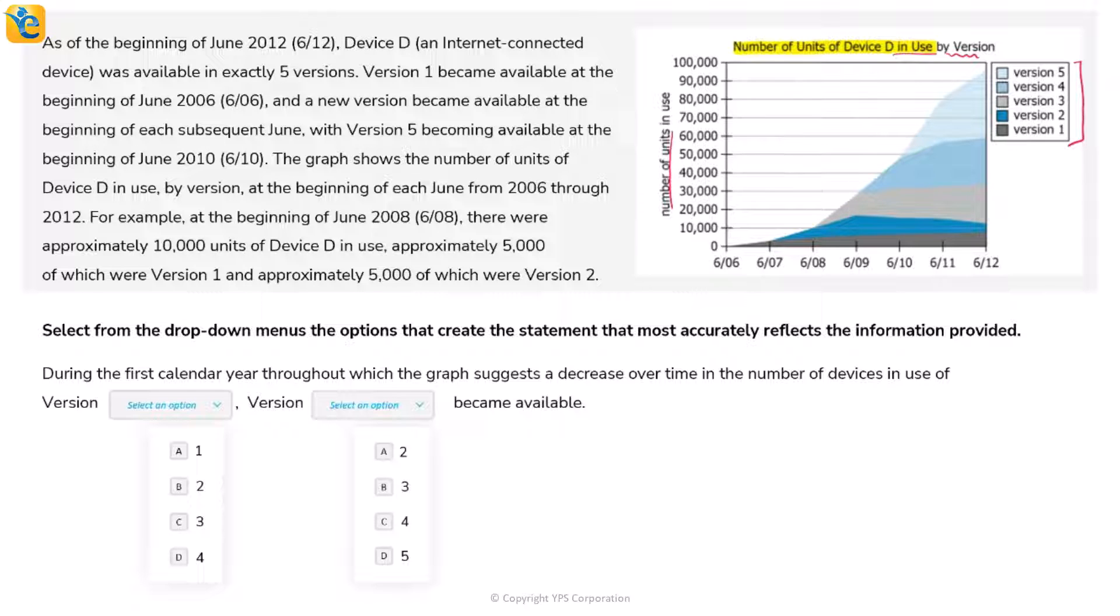The x-axis shows dates beginning with June 2012, written as 6/12. We can read the others similarly: June 2006 is this one, June 2010 is this one. All of these are Junes because we always see 6 as the first number, then the year: 2006, 2007, 2008, 2009 through 2012.